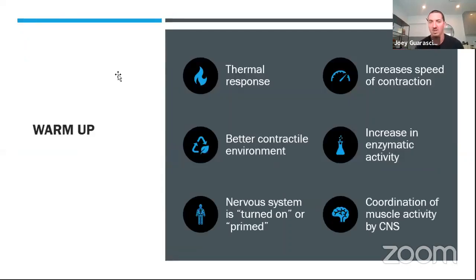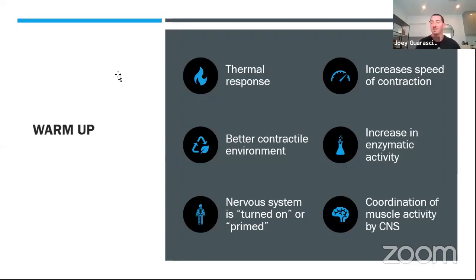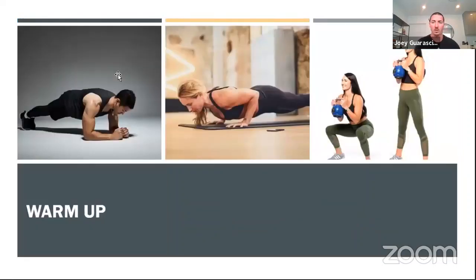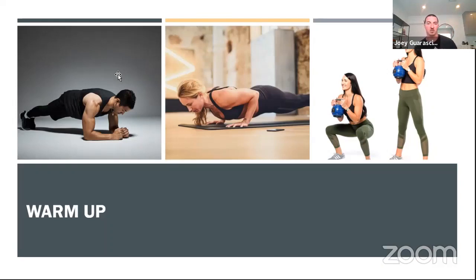We use isometrics in the warmup because there's a thermal response to it — we create a better contractile environment, prime the nervous system, increase speed of contraction, increase enzymatic activity, and increase coordination of muscle activity by the central nervous system. You're bringing more blood to the muscle and getting that muscle to communicate with the brain at a faster rate. Examples include plank, side plank, front plank, push-up holds, goblet squat holds, and split squat holds. The creativity is unmatched because it's joint specific.